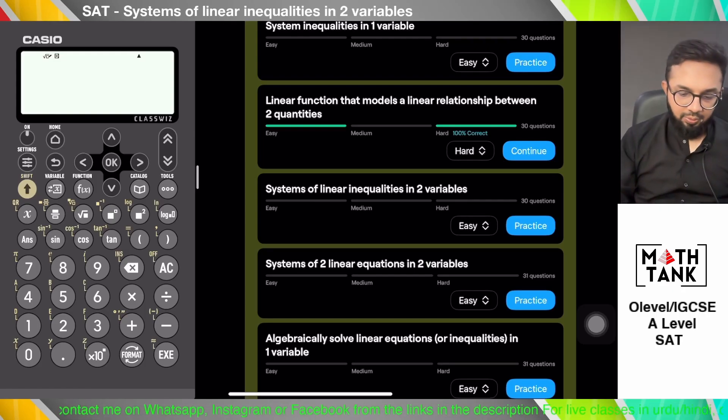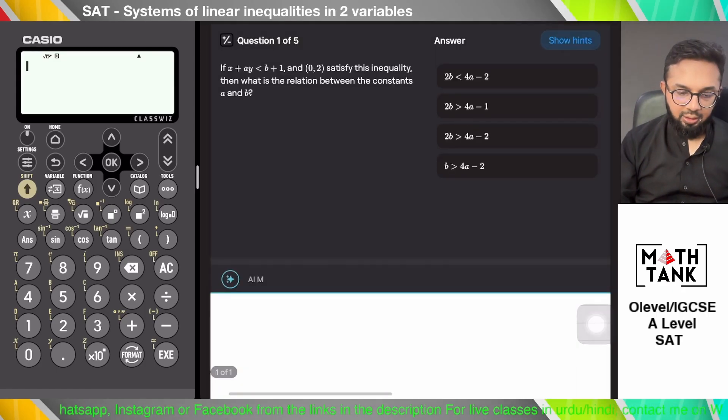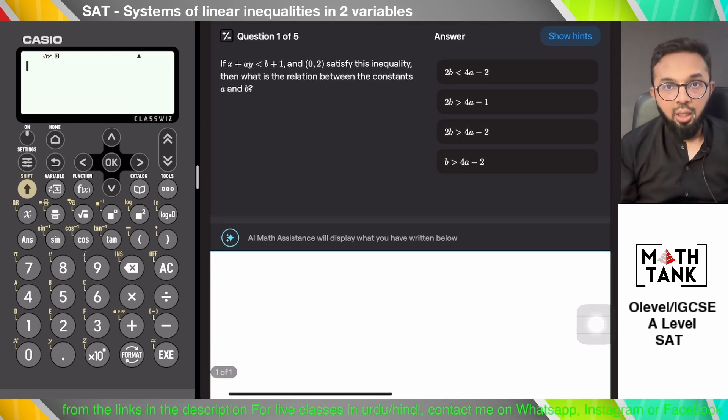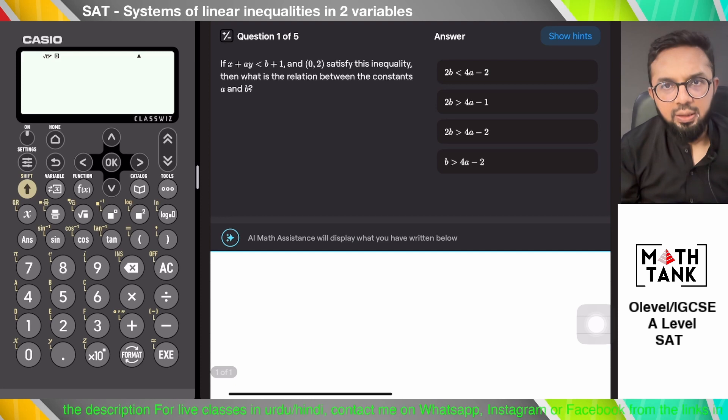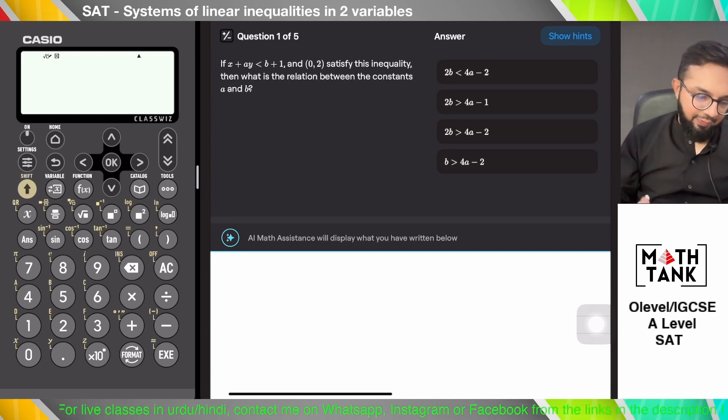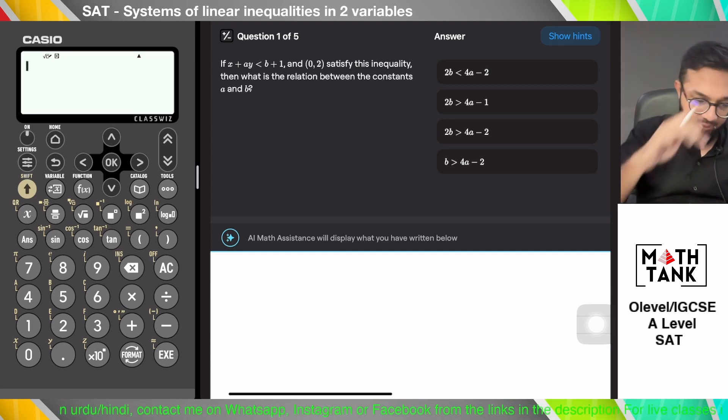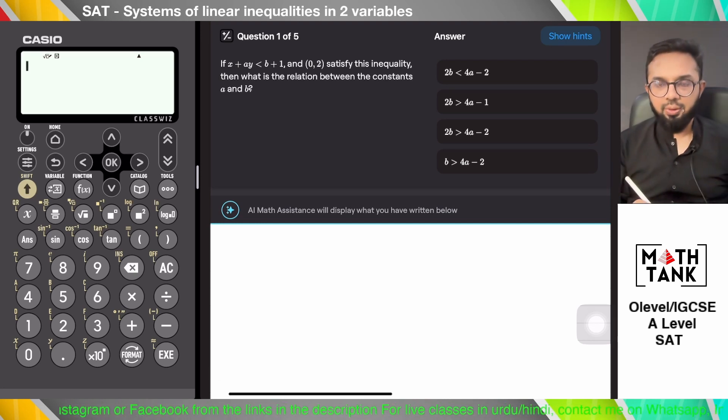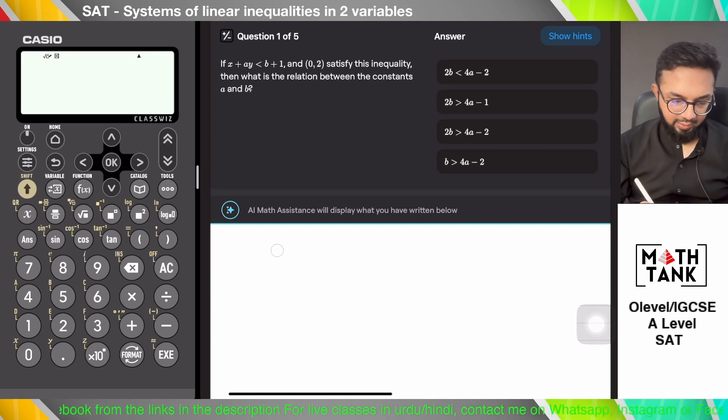Hello and welcome to another video. Today the topic is systems of linear inequalities in two variables. Let's start solving this. If x plus ay is less than b plus 1 and (0,2) satisfy the inequality, whenever a value satisfies the inequality, what you do is plug it back in.